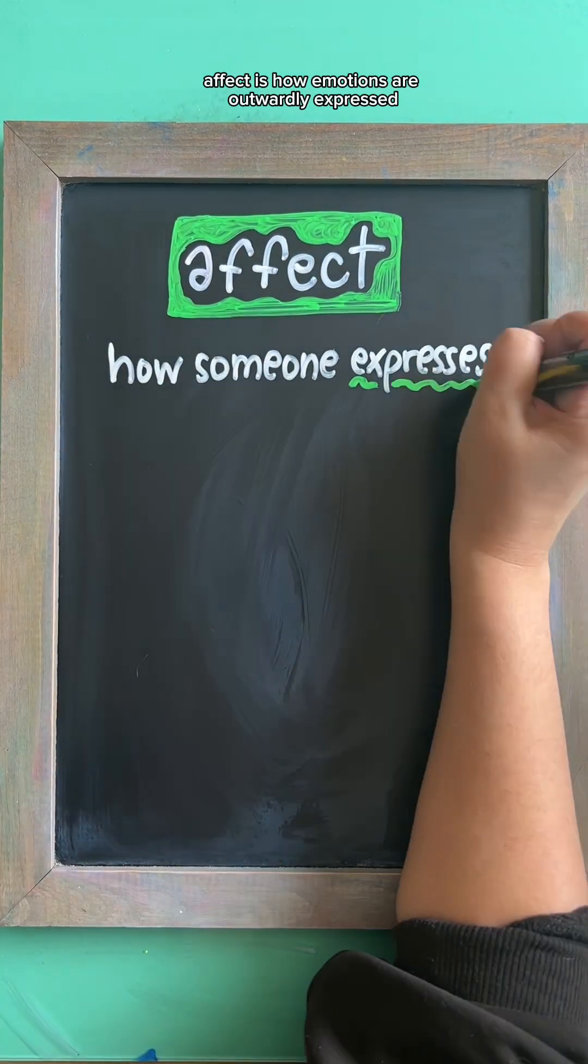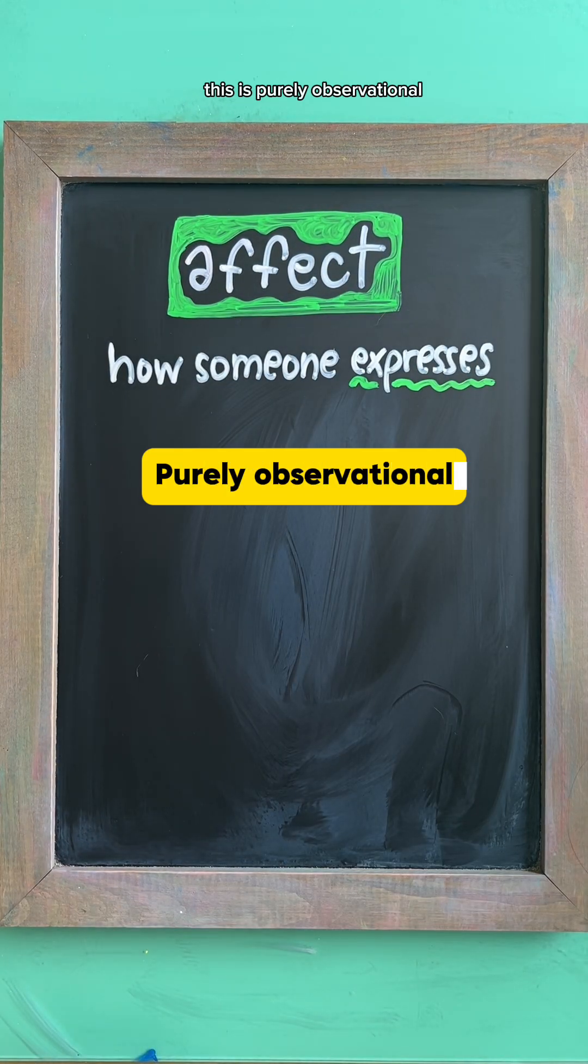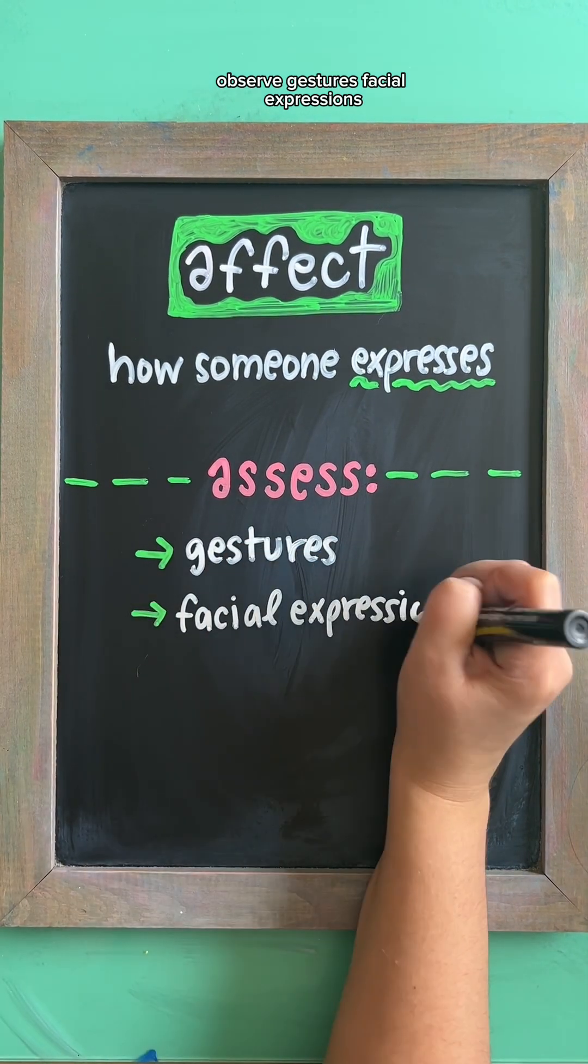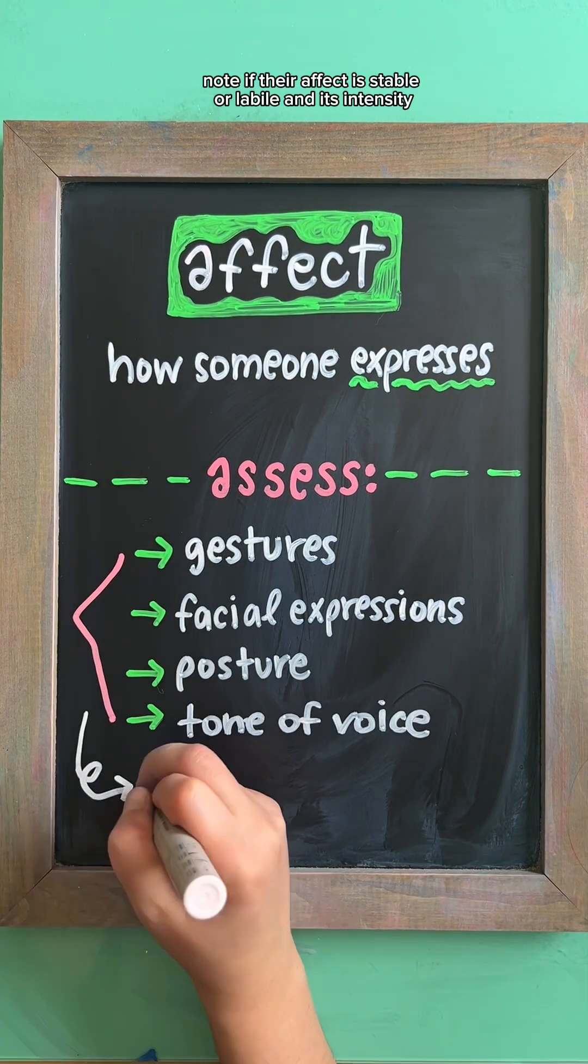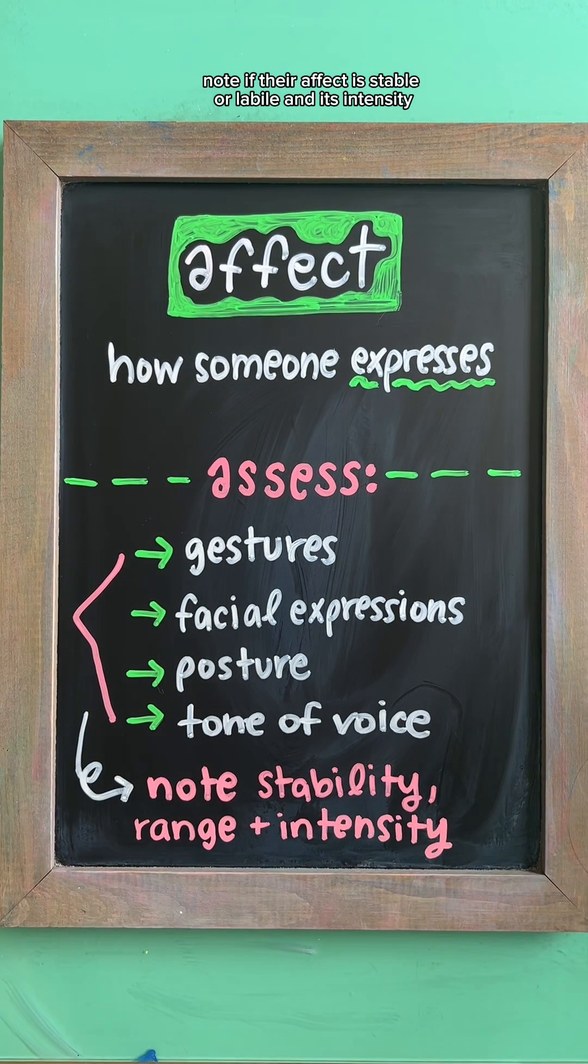Affect is how emotions are outwardly expressed. This is purely observational. Observe gestures, facial expressions, posture, and tone of voice. Note if their affect is stable or labile and its intensity.